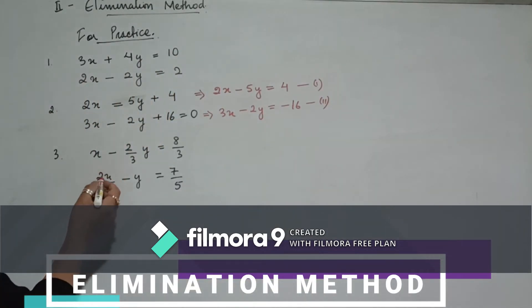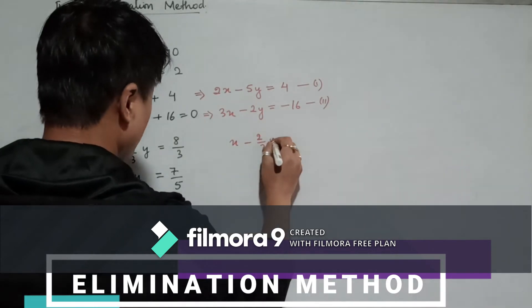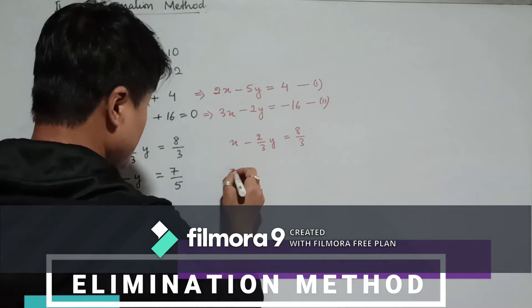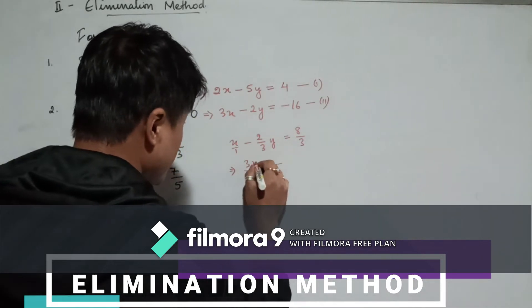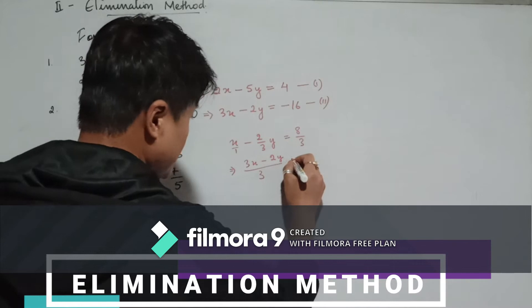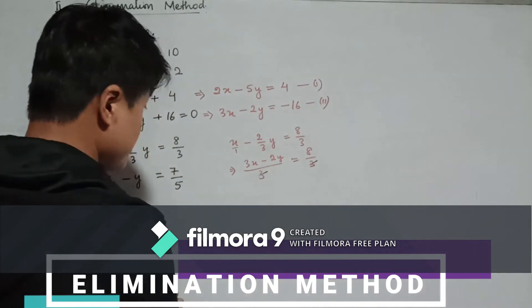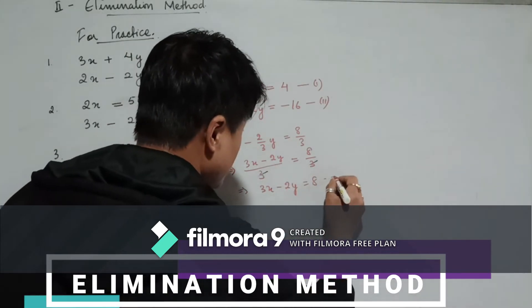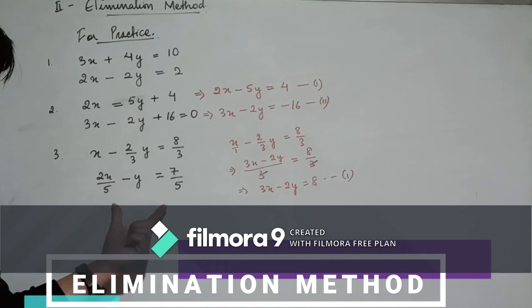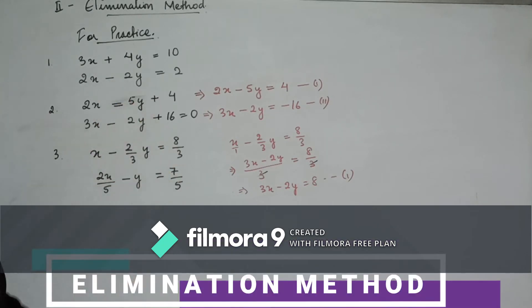For the third practice sum, first take the LCM. For example, x minus 2/3 y equals 8/3 — take LCM of 3. Multiplying through: 3x minus 2y equals 8 upon 3, and since both have denominator 3 we cancel it, giving 3x minus 2y equals 8 as equation 1. Similarly derive equation 2, and then solve the system.